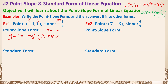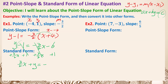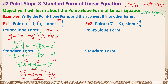We need to get rid of fractions to have only integers. First, distribute: y minus 1 equals negative 3 halves x minus 6. Then add 3 halves x to both sides and add 1 to both sides, giving 3 halves x plus y equals negative 5. Multiply everything by 2 to eliminate the denominator: 3x plus 2y equals negative 10. That is the standard form.